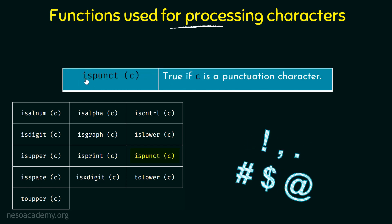Next we have ISPUNCT, which checks if the character C is a punctuation character. Punctuation characters are characters like exclamation mark, comma, dot, hash, dollar symbol, at symbol, and so on. You can check for the complete list of punctuation characters. If it is a punctuation character it returns true, and if it is not it returns false.